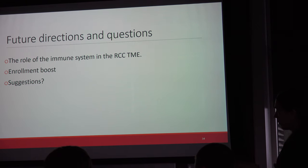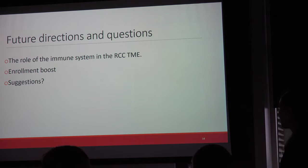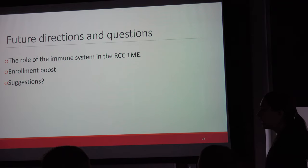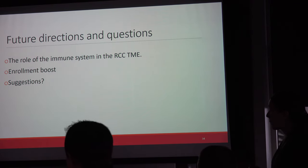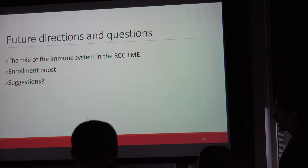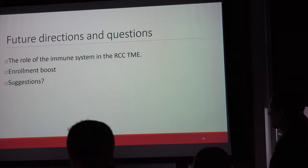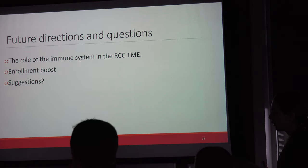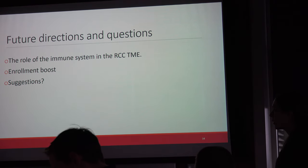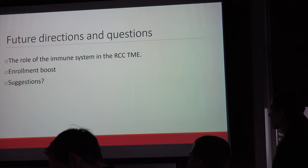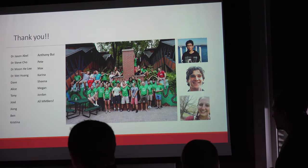Future directions include exploring the role of the immune system in the RCC tumor microenvironment. With the recent change in standard of care — many patients now receiving immune checkpoint inhibitors instead of anti-angiogenics — it would be very interesting to test those in our models, though the current model doesn't yet support that. Increasing enrollment is also needed, as we currently have only 1.5 patients due to one withdrawal. We're happy to take suggestions for future endpoints.